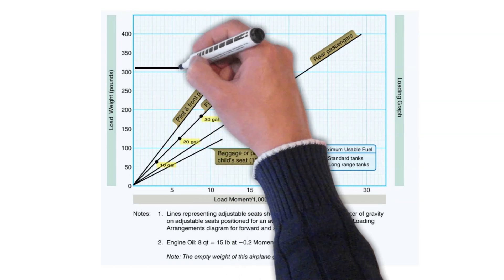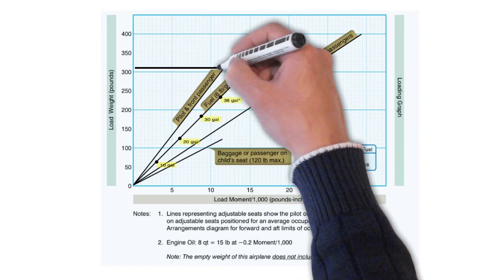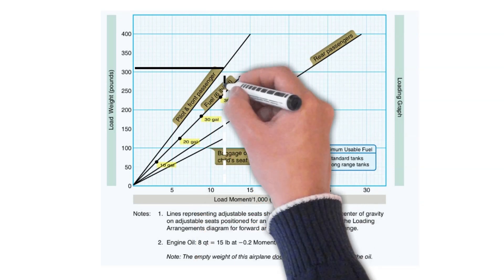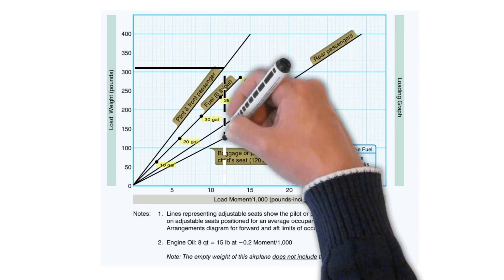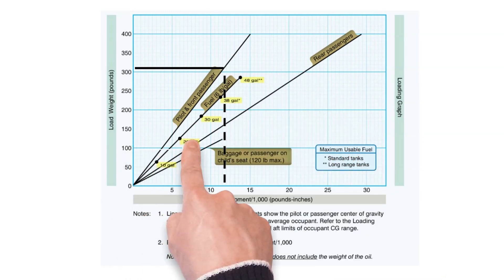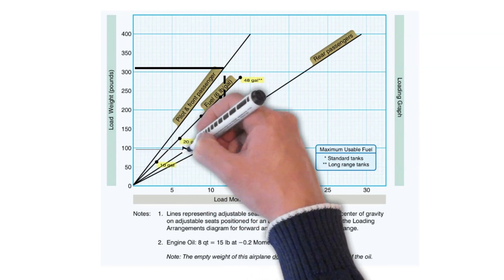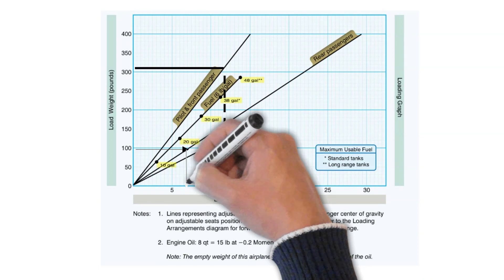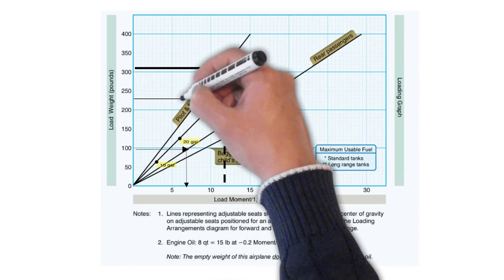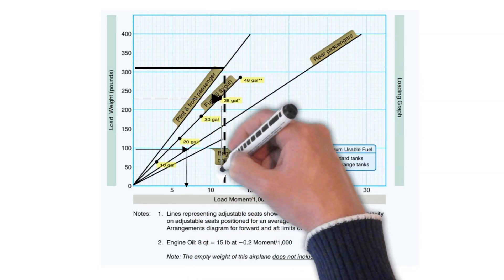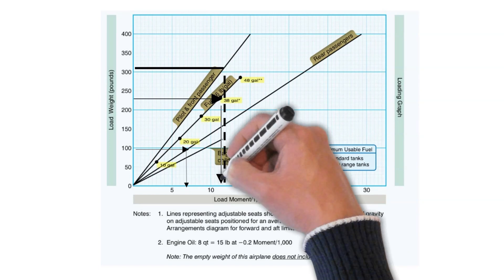To find the weight for the pilot and front seat passenger, draw a line just above the 300 number on the left since the weight is 310 pounds for the front passenger and pilot. Draw the line from left to right until the line intersects the pilot and front passenger line in the chart. We then draw a line down to the bottom of the chart to find the aircraft's moment divided by 1,000. We can see the moment divided by 1,000 is about 11.7 for the pilot and front passenger.